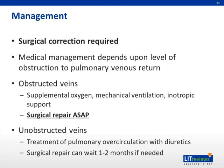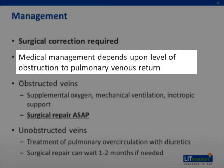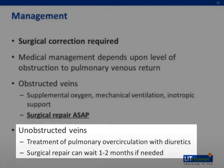The only successful management of these patients is surgical correction. Surgical management may be an emergent need in patients with obstructed physiology. Medical management depends upon the level of obstruction: in patients with obstructed veins, you can give supplemental oxygen, mechanical ventilation, and inotropic support, but surgical repair is needed as soon as possible. In patients with unobstructed veins, you would treat pulmonary overcirculation with diuretics, and surgical repair can wait until one to two months of age if needed.